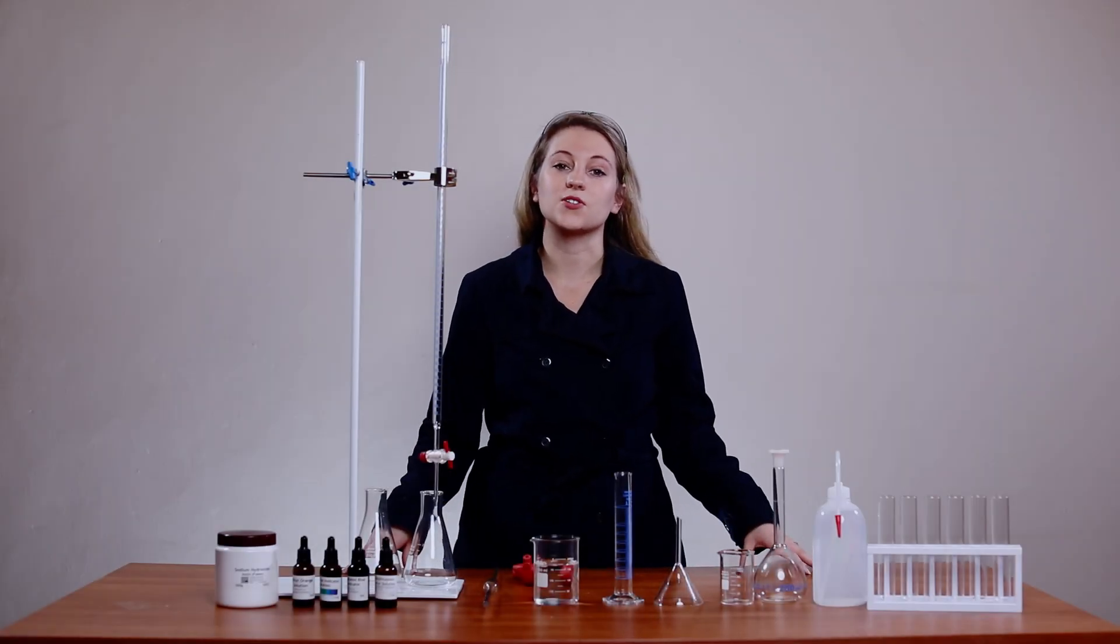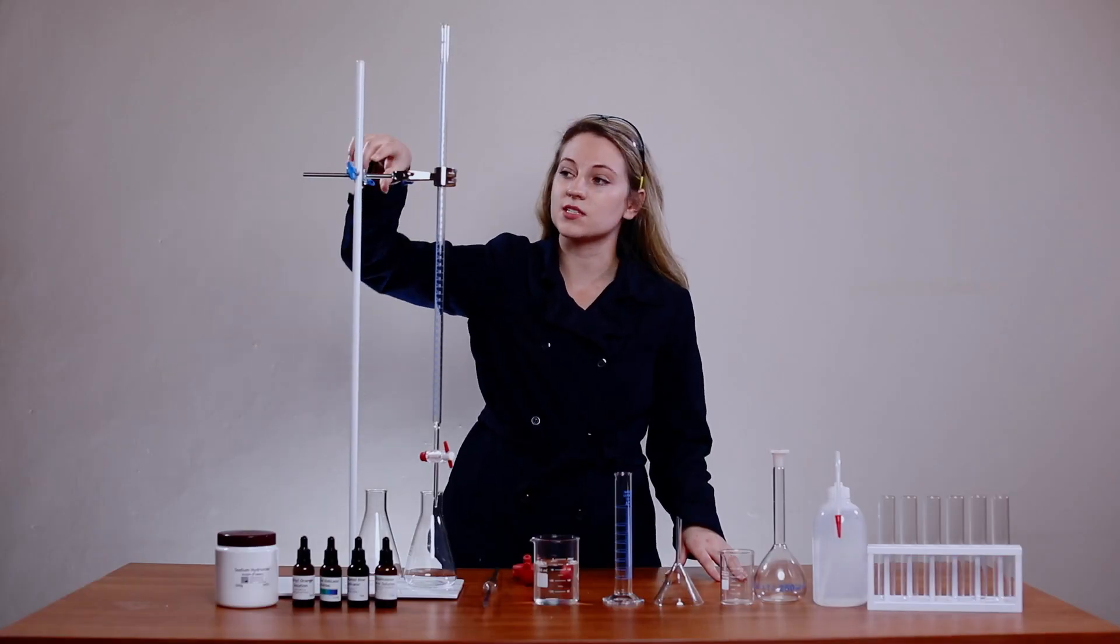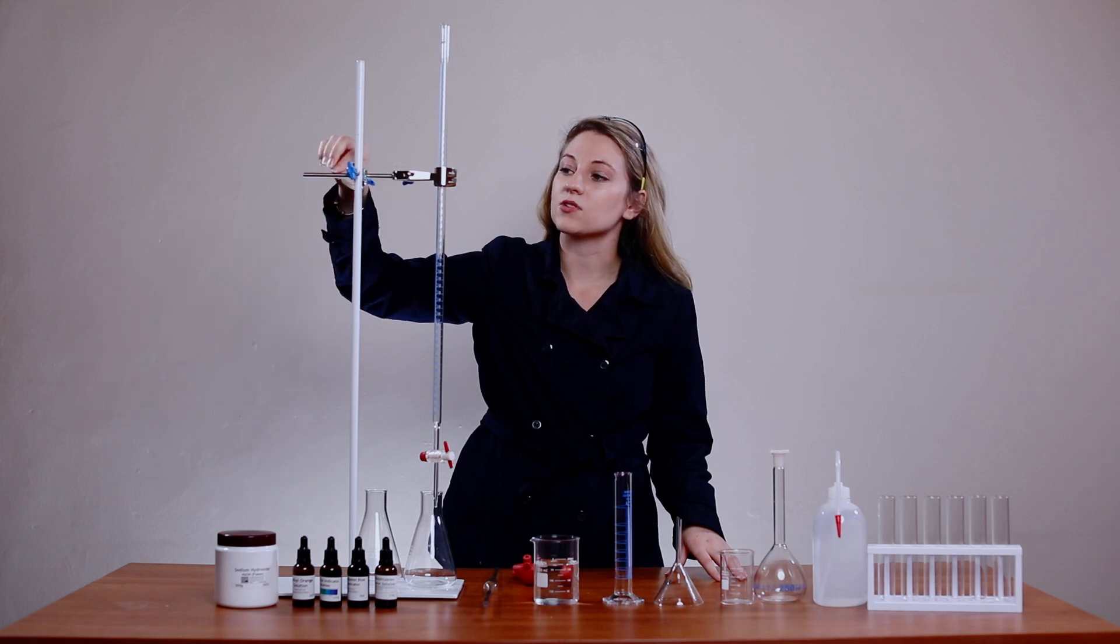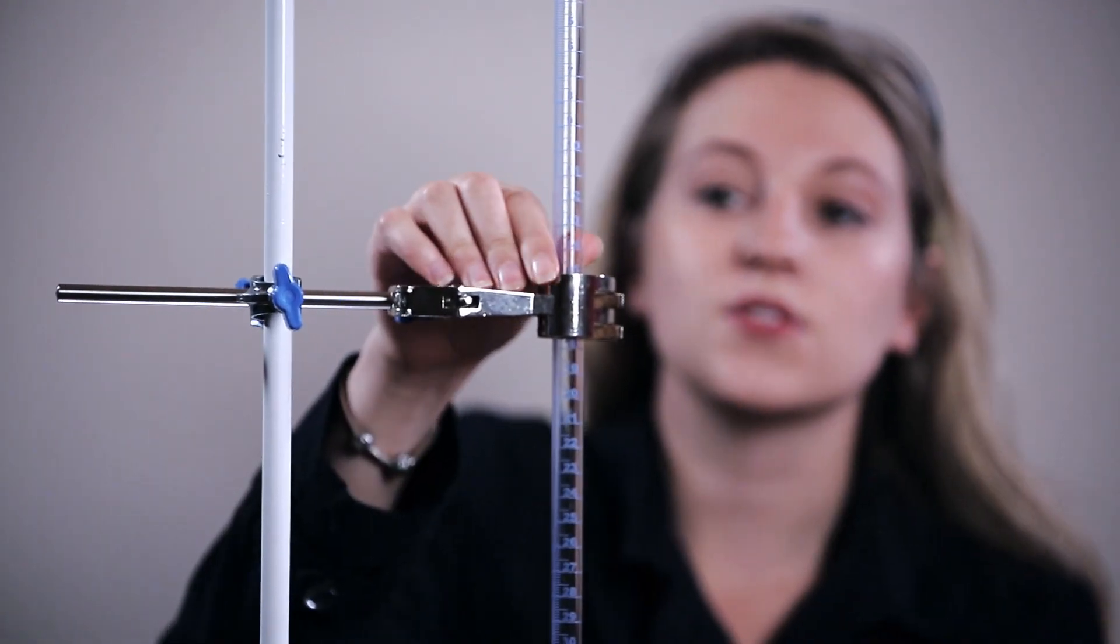Today's video is going to be on the equipment that you require to perform a titration. First of all, you need a stand and a boss clamp, which is this little clamp here, and also a clamp that can hold your burette.